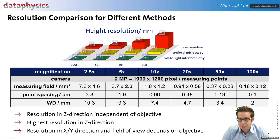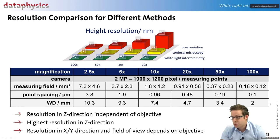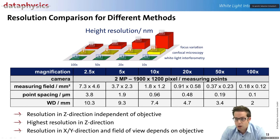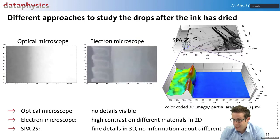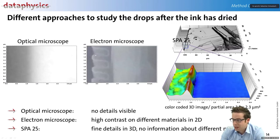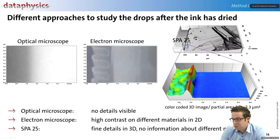The resolution in X and Y depends on the objective. Using a 100x objective gives around 100 nm point spacing in X and Y. With a normal 5x or 10x objective you get around 1 micrometer resolution in X and Y. Comparing technologies: with an optical microscope you see gray and white; with an electron microscope you see some structure; with the surface profile analyzer the whole thing becomes a three-dimensional model with very precise height information. We can generate a 3D map of such objects.